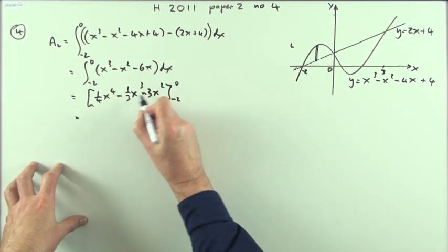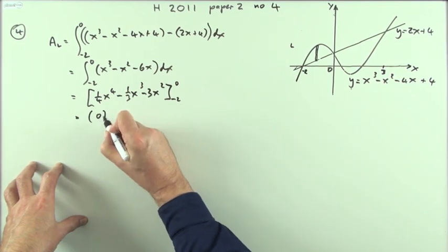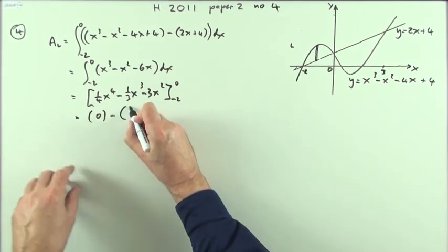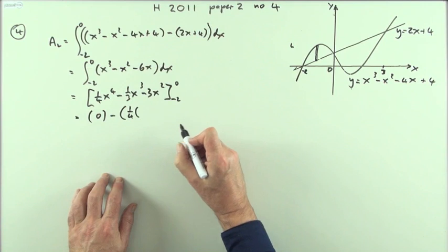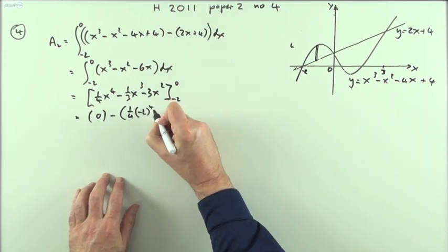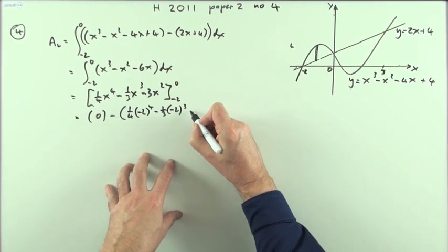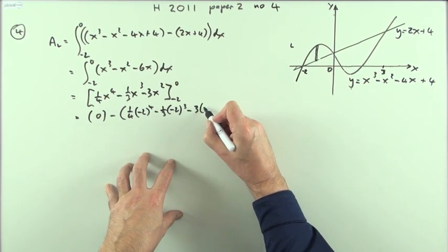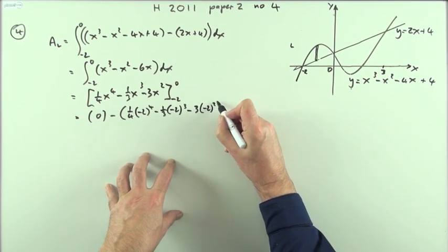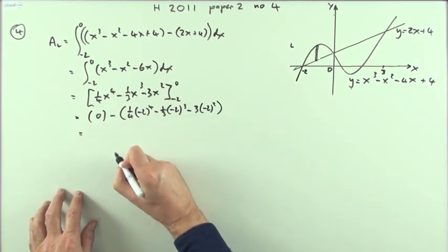Now work it out twice. Work it out at zero - they're all x terms, so that disappears. Now work it out at negative two. I'll show the substitutions. Negative two to the fourth, that's not too bad. A third of negative two cubed, that's nasty. Three times negative two squared, that's fine.